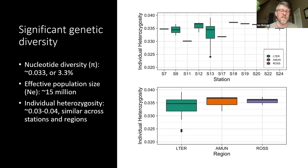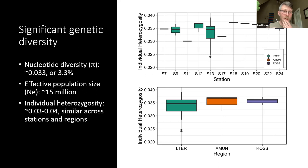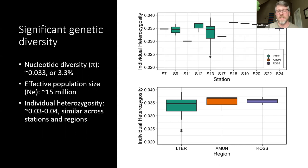Another way to look at this is individual heterozygosity — how many non-coding, non-repeat sites in the genome are biallelic and heterozygous. We have about 3 to 4% heterozygous sites in each of these assembled genomes. Importantly, this doesn't seem to vary by region or by station — that level seems to be pretty stable across the board.